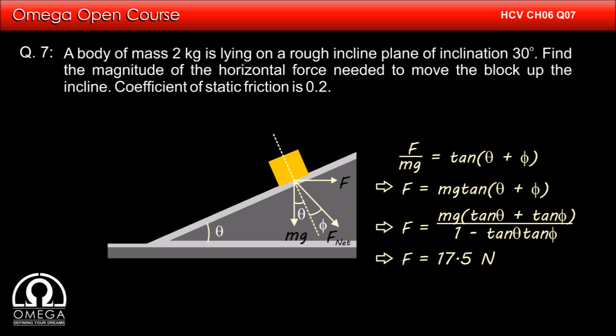Putting the value of theta as 30 degrees and tan phi as mu, that is 0.2, we get F is equal to 17.5 newtons. This is our answer.